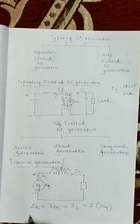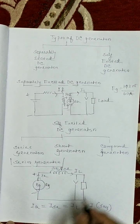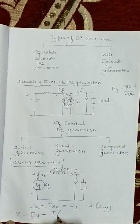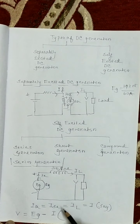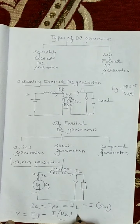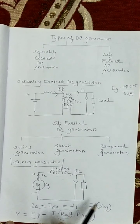The generating EMF equation: the terminal voltage — or load voltage — is V equals to EG minus I times (Ra plus Rse), where I can be IA, ISE, or IL, as all are the same in a series generator. Ra is armature resistance and Rse is series field resistance.